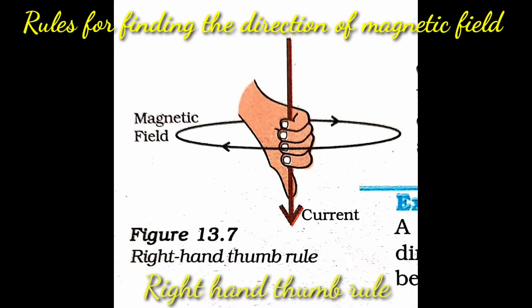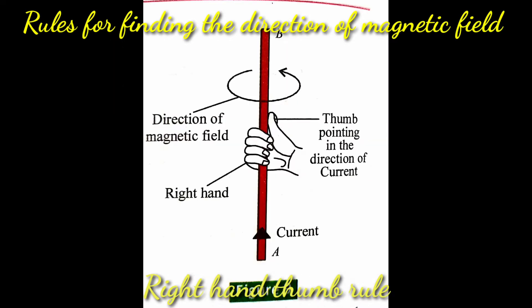In the previous video we discussed the right-hand thumb rule. This rule states that if a current-carrying conductor is held in the right hand such that the thumb points towards the direction of current, then the direction of the curl of fingers around the conductor gives the direction of the lines of magnetic field.